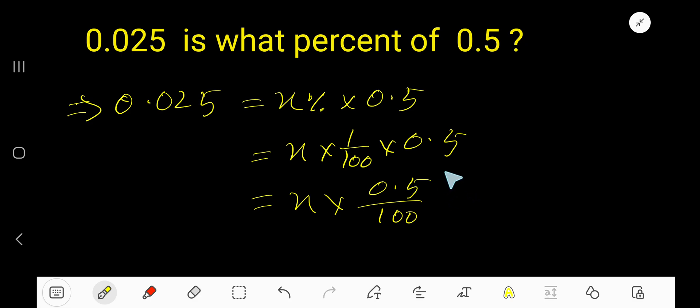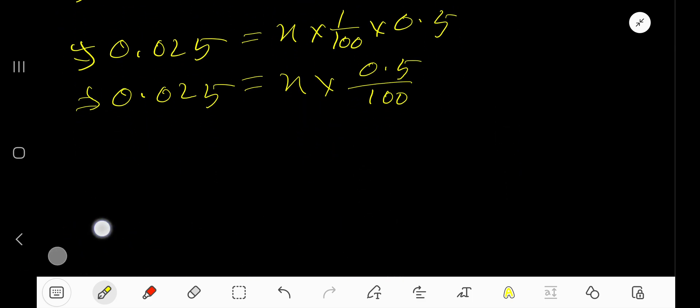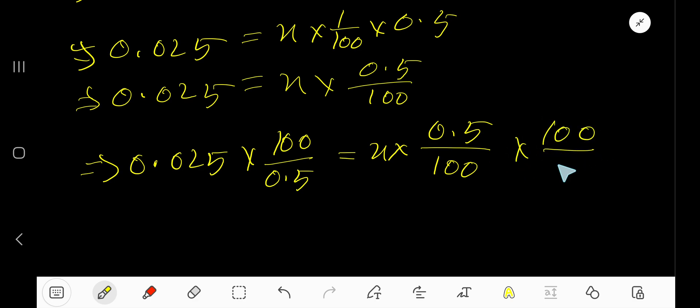So now 0.025. To find out the value for x, just multiply both sides by the reciprocal of this fraction, that is 100 over 0.5. So 0.025 times 100 over 0.5 equals x. Cancel the 0.5 over 100 and 100 over 0.5, so we are getting x equal to this.